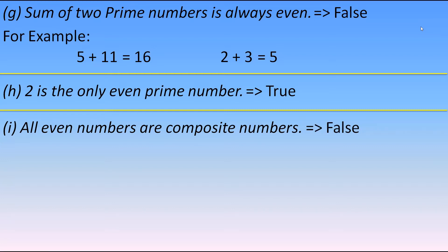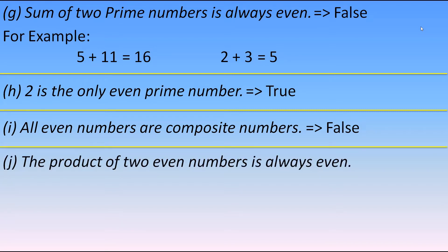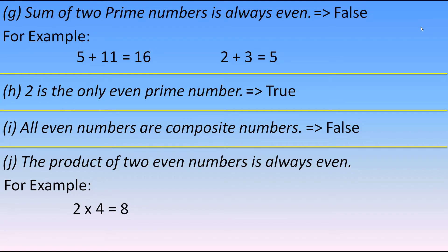Next statement: the product of two even numbers is always even. Taking 2 and 4 — their product is 8, which is even. Multiplying 6 by 8 gives 48, which is also even. Therefore the product of two even numbers is always even is true.